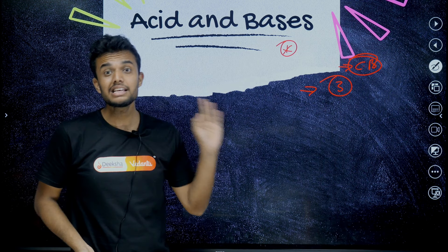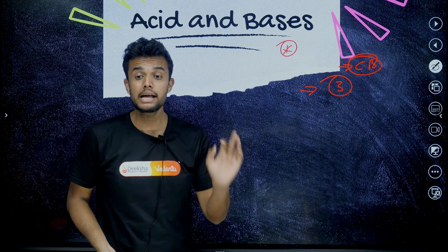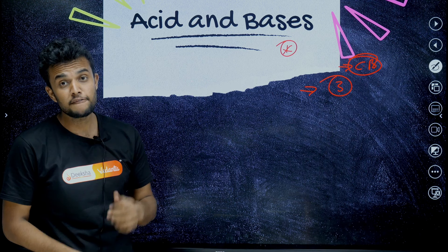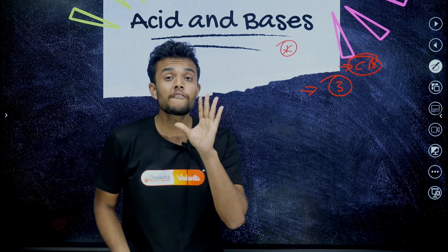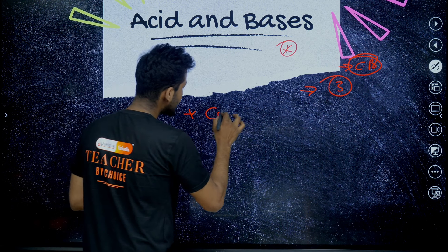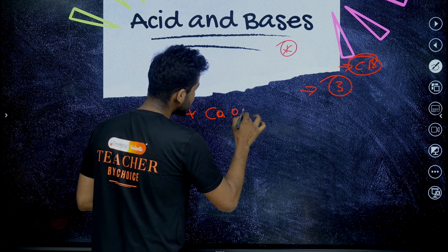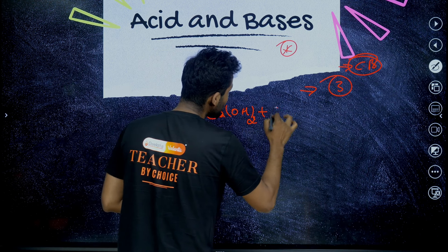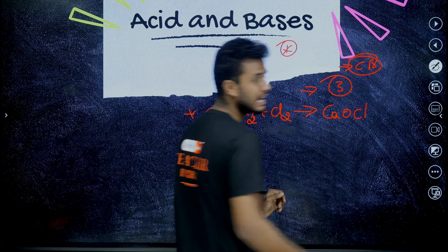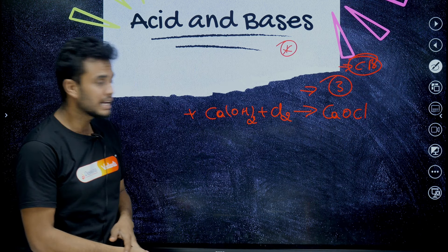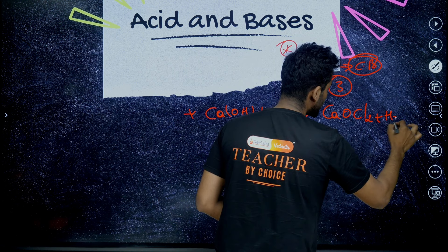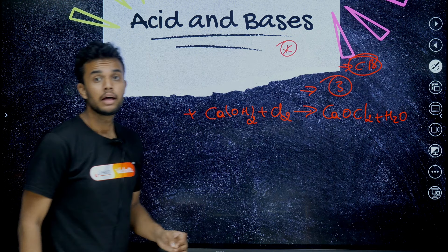In this unit, mainly two reactions on preparation of salts are important. The first one is the use of chlorine in bleaching powder: Ca(OH)2, calcium hydroxide, is reacted with chlorine to yield bleaching powder — CaOCl2 plus H2O.